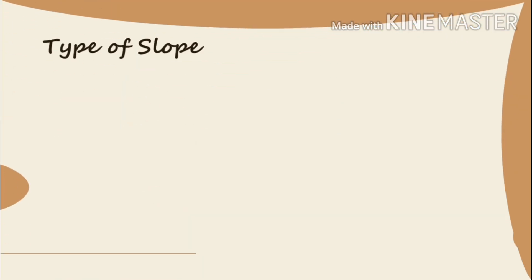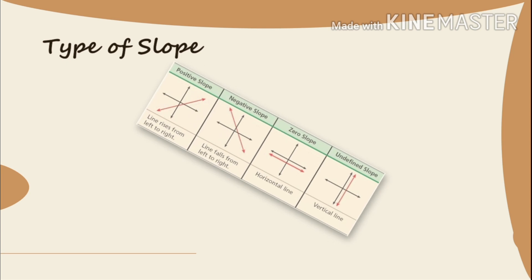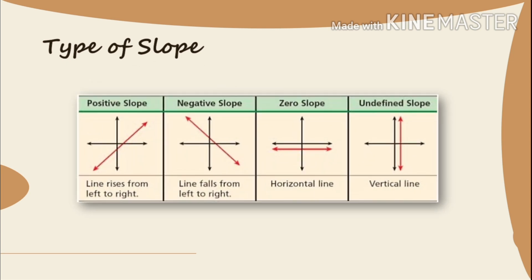Types of slope: A line that rises from left to right is a positive slope. A line that falls from left to right is a negative slope. A horizontal line is a zero slope, and a vertical line is an undefined slope.